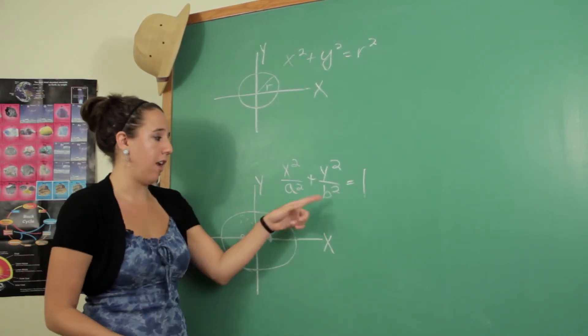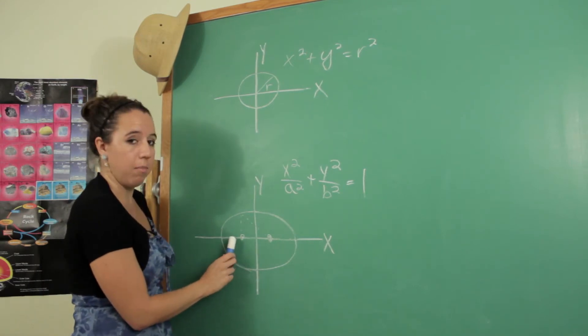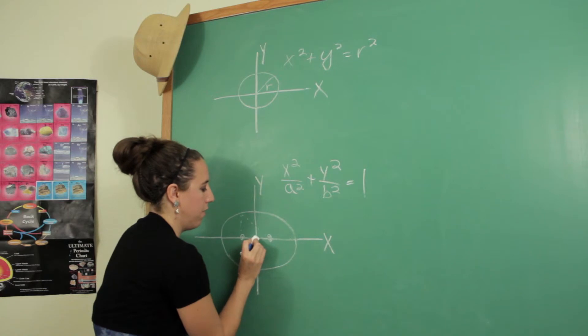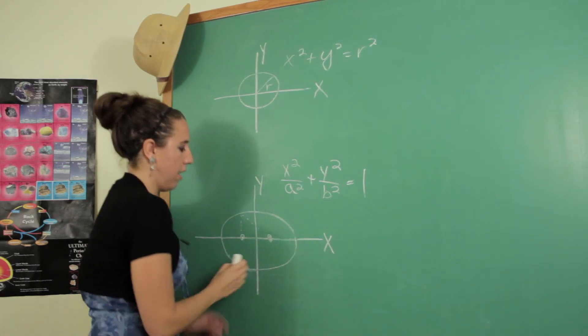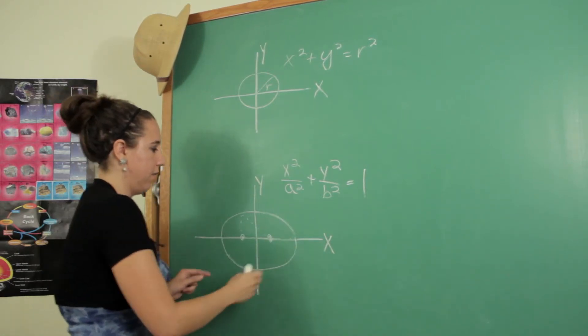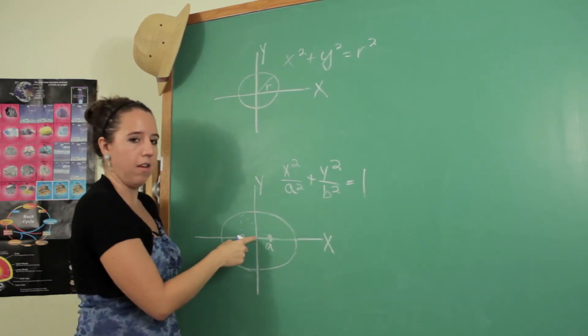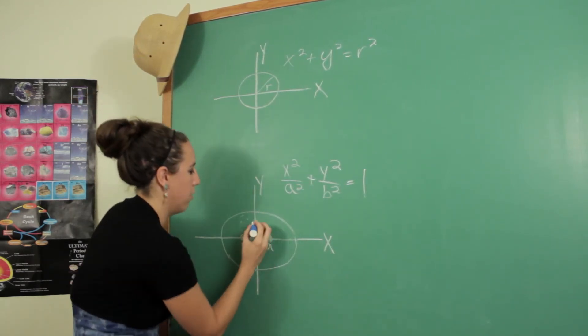So I haven't defined a and b yet. They're actually going to depend on the focal points. a is going to be the distance from the center to the outside of the longer axis. And then b is going to be the distance from the shorter side.